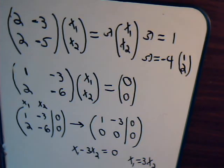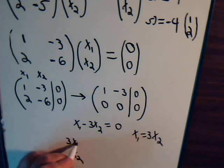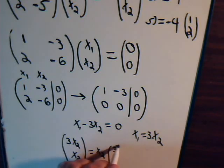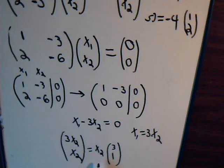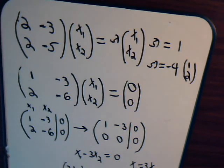So x1 equals 3 times x2. For our eigenvector, x2 is a free variable that can be anything, and x1 is 3 times x2. We can write this as x2 times the vector [3, 1]. Since multiplying an eigenvector by a constant still gives an eigenvector, as demonstrated in video 15, we can simply write [3, 1] as the corresponding eigenvector.